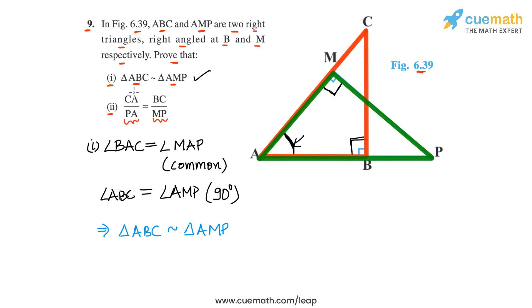The first ratio is CA by PA, which is CA, this side in the first triangle, by PA, this side in the second triangle.